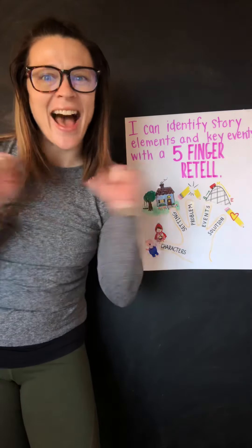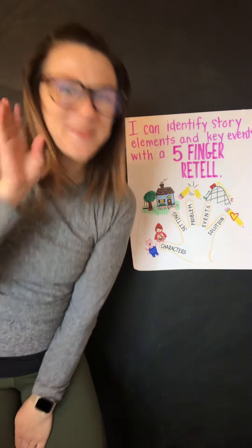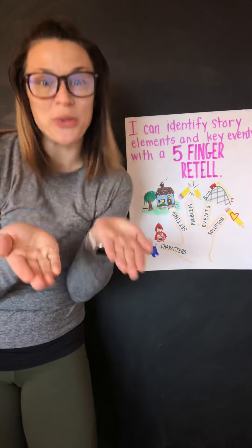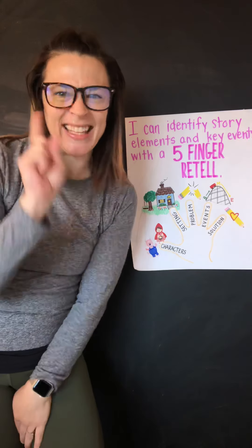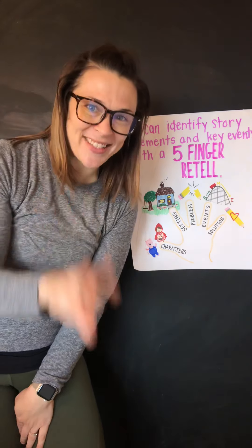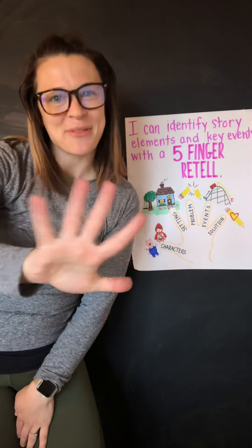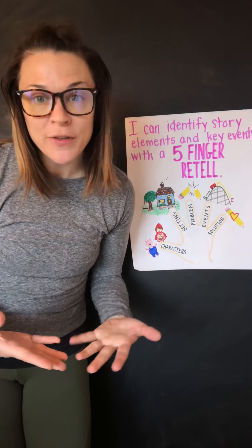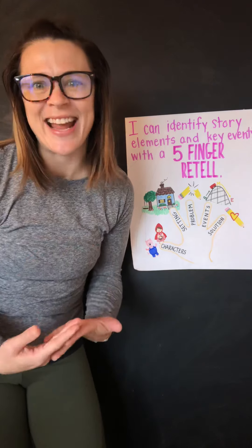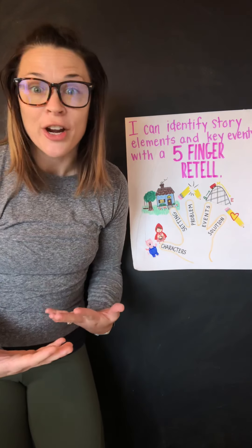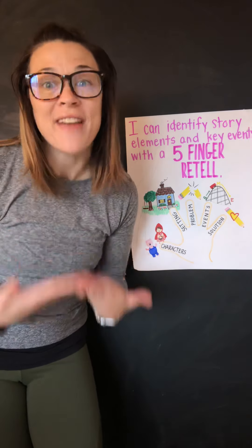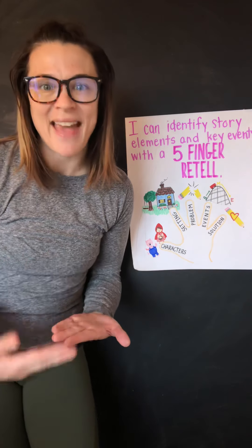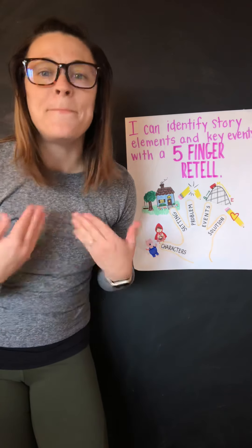I can identify story elements and key events using the five-finger retell. It's important that you understand different parts of stories like the characters, the setting, the title, the author, and important events like what happened at the beginning, the middle, and the end.